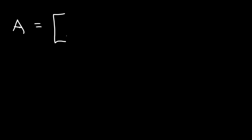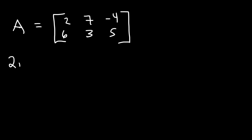In this video we're going to focus on matrices. A matrix is simply an array of numbers organized into rows and columns. Let's talk about the order of a matrix. Consider matrix A with the numbers 2, 7, negative 4, 6, 3, and 5. This matrix has two rows and three columns.